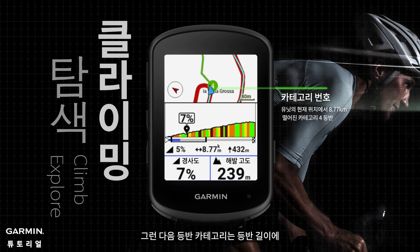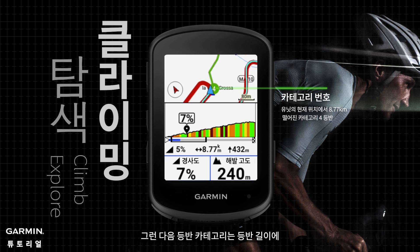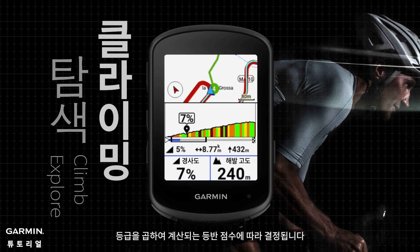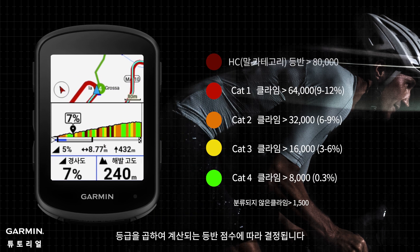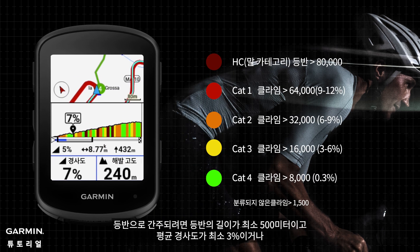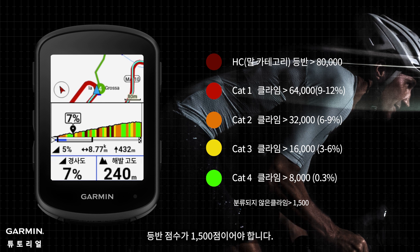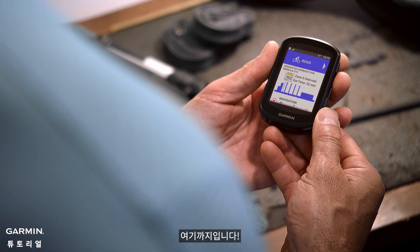The climb categories are determined by the climb score, which is calculated using the grade multiplied by the length of the climb. A climb must have a length of at least 500 meters and an average grade of at least 3%, or a climb score of 1500, to be considered a climb.